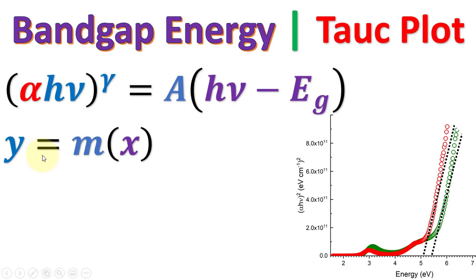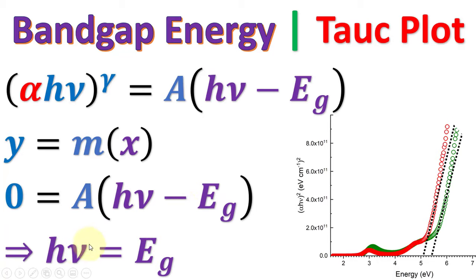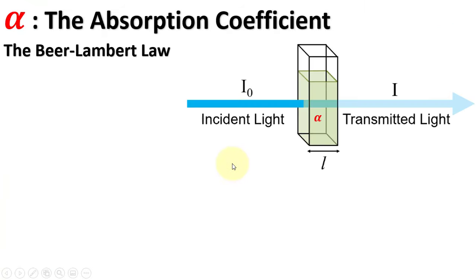If we compare the Tauc equation with the straight line equation, putting the y-axis equal to 0 will bring us to the x-axis. Solving for the energy, the extrapolation of the linear region of the plot onto the x-axis gives the band gap or edge energy. In this equation, we will first understand the absorption coefficient alpha.